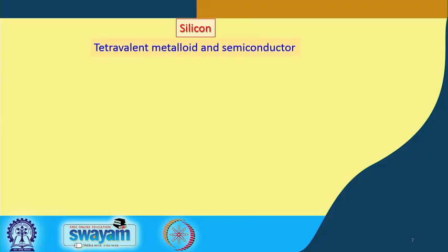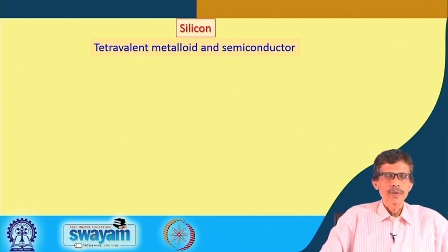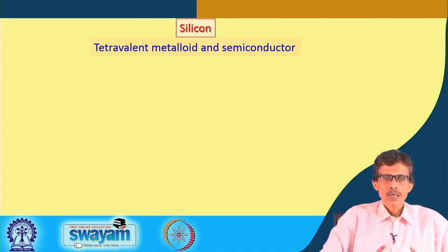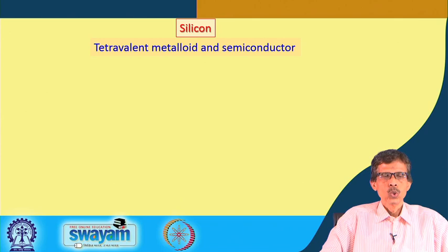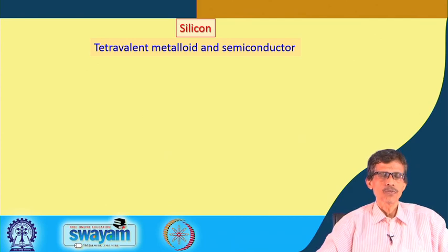Next we will move to another element — silicon. Silicon is industrially very important and we consume a huge amount of silicon for the production of very precious elements. The tetravalent metalloid — we can consider silicon in the tetravalent state — up to simple quartz silica or silicon dioxide, where silica is present as SiO2. The tetravalent metalloid can also be used as a semiconductor in its elemental form.